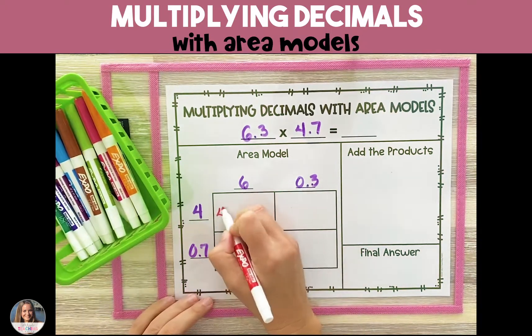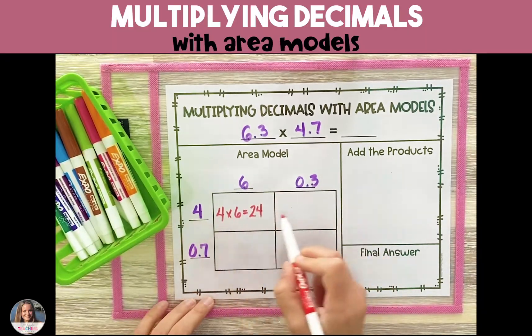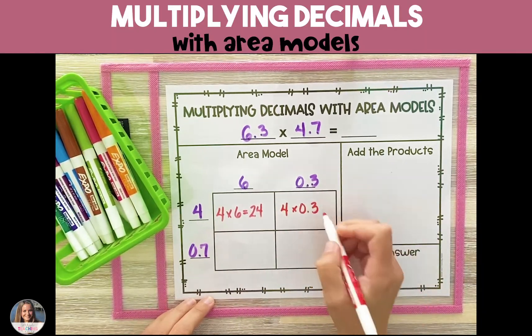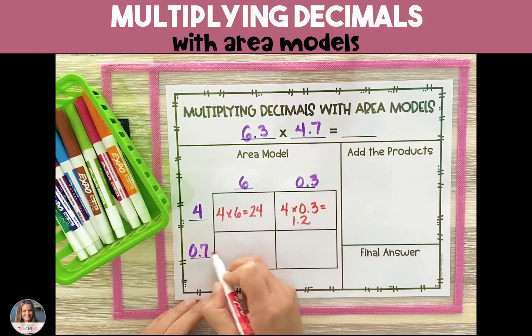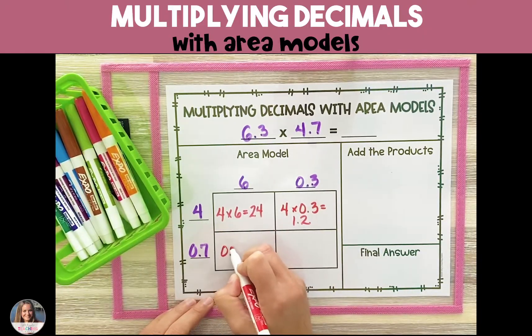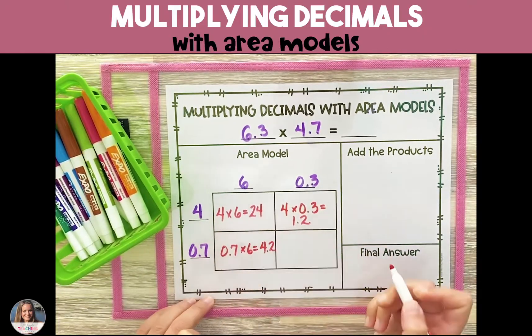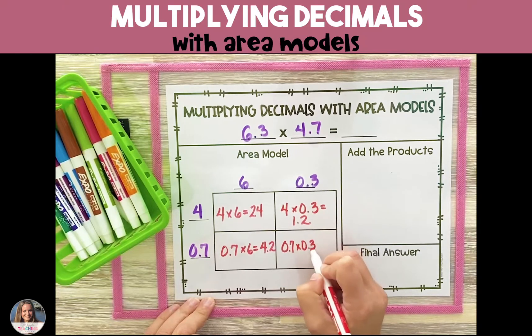Next, we're going to find the area of each section of the rectangle. To do this, we're going to multiply the number to the left and the number above each section and find the product within each.